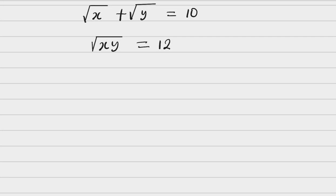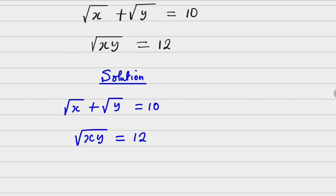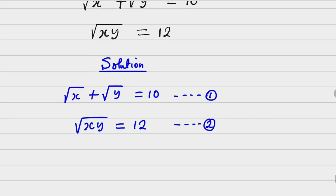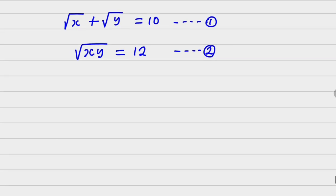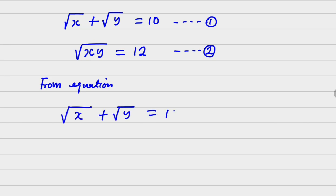Hello students, welcome to class. Today we are going to be working out a simultaneous equation. We have equation one and equation two. The method of solving this: we pick equation one, and what we have to do is square both sides. So we have square root of x plus square root of y equals 10, and on squaring both sides...